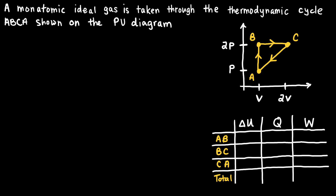Let's start with the first process AB. That process is a vertical line and is an isochoric — meaning same volume — process. Sometimes this is also called an isovolumetric process. We give it this name because the change in volume of the gas is equal to zero. So anytime you have a vertical line, we refer to that as an isochoric or isovolumetric process.